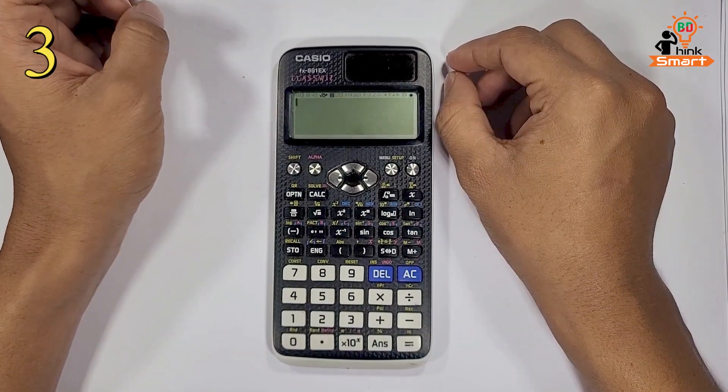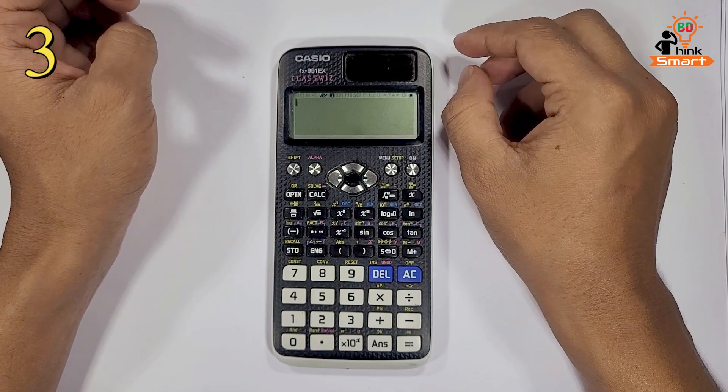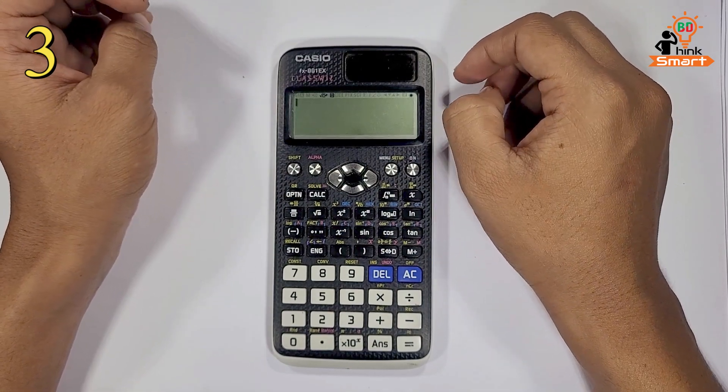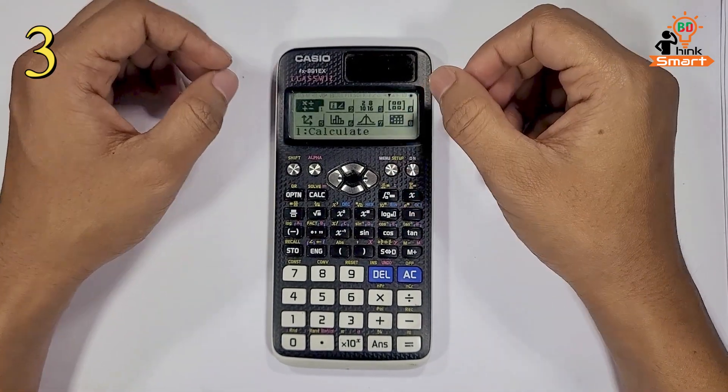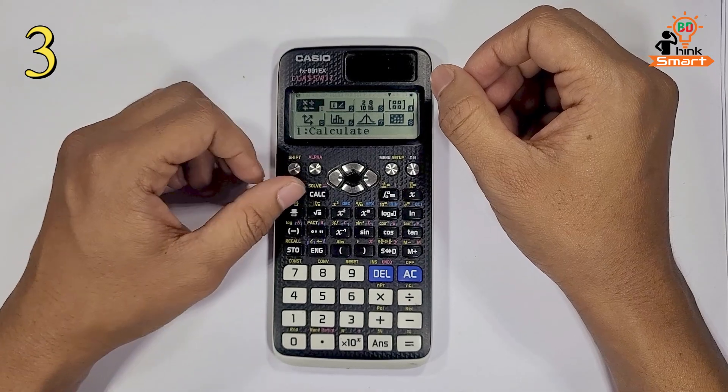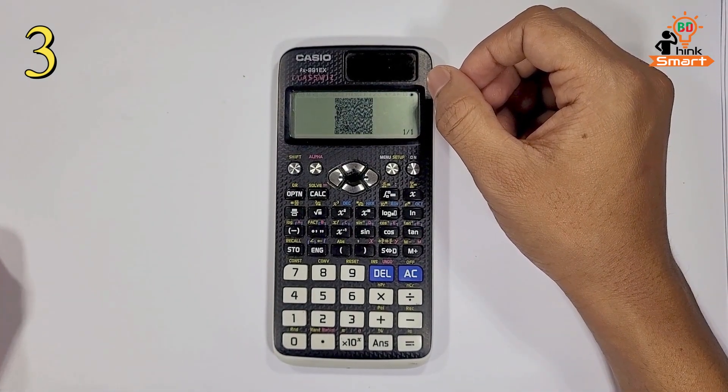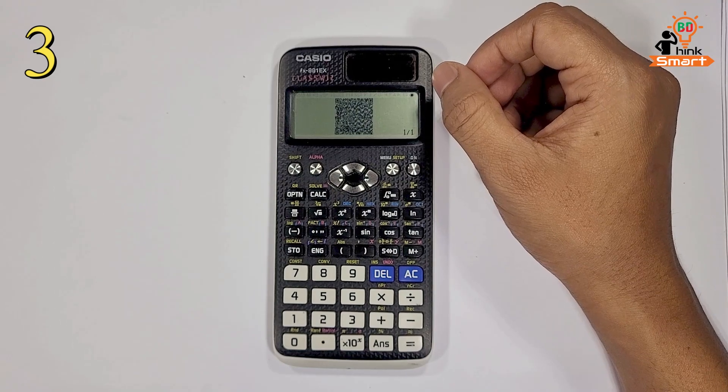The most reliable way to verify the authenticity of the calculator is to scan the QR code. To get the QR code, first press menu, then press shift plus option. You will get a QR code. Now scan the QR code with your mobile phone.